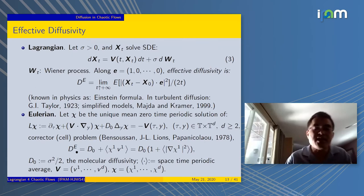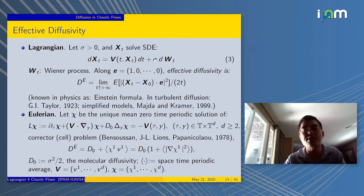You could read a lot more about this in the classical book of Bensoussan-Lions-Papanicolaou. Here's the formula for D_E. It's given by D_0, which is essentially the σ² over 2, the molecular diffusivity as constant. Then plus the correction, which is χ_1, the first component of χ, times the first component of velocity.